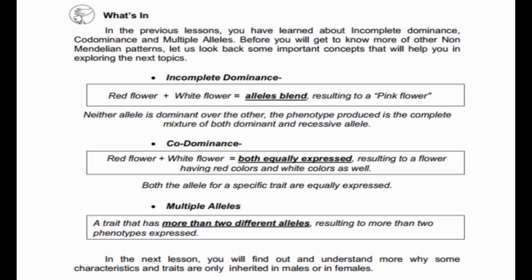In the previous modules, you learned about the non-Mendelian patterns of inheritance. Let's review these concepts. Incomplete Dominance: neither allele is dominant over the other — the phenotype produced is a complete mixture of both dominant and recessive alleles. An example is a red flower crossed with a white flower resulting in a pink flower. Co-dominance: both alleles for a specific trait are equally expressed, so red plus white results in both red and white colors on the flower.